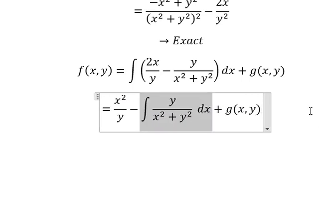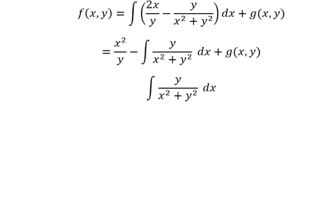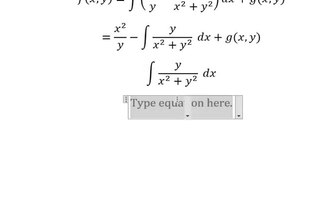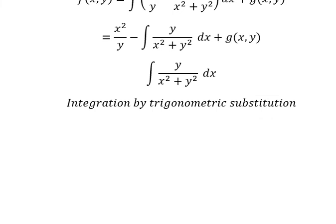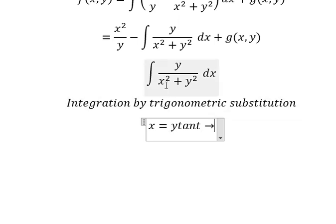For this integral we can use integration by trigonometric substitution. I will put S equals to Y·tan(t), because if we substitute, we get Y²·tan²(t) plus Y squared — we can factor out Y² giving tan²(t) plus 1, which we replace with sec²(t), and then simplify.